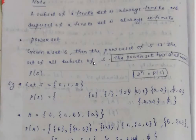If a set is not finite, then it is infinite. The power set of a set A is the collection of all subsets of A. If you have any set of n elements, the power set has 2 raised to n elements.